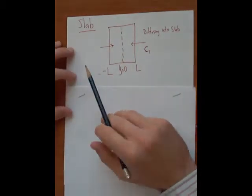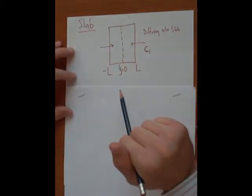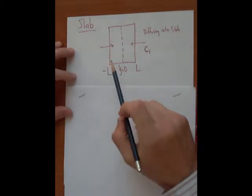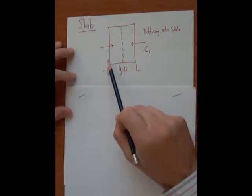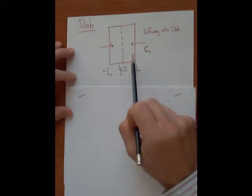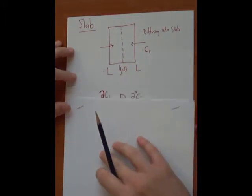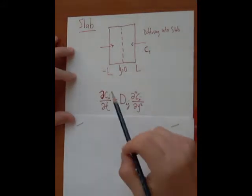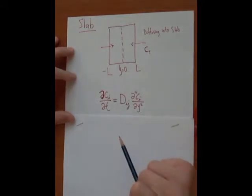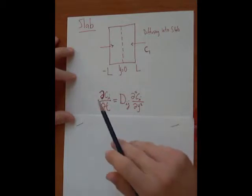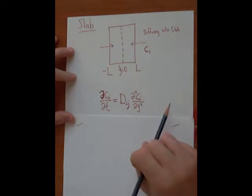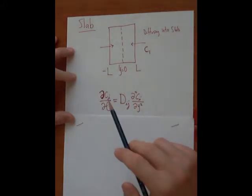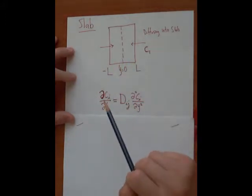So first of all, let's think about what our governing equation would be to figure out what the diffusion would be into the slab so that we can figure out our concentration profile within the slab over time. Now, to do this, we can use Fick's second law. So this is unsteady diffusion in rectangular coordinates, and you can see that there's no convective terms or reaction terms because this is just going to be simple diffusion.